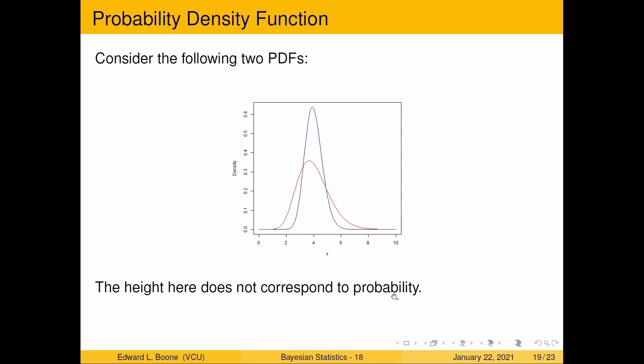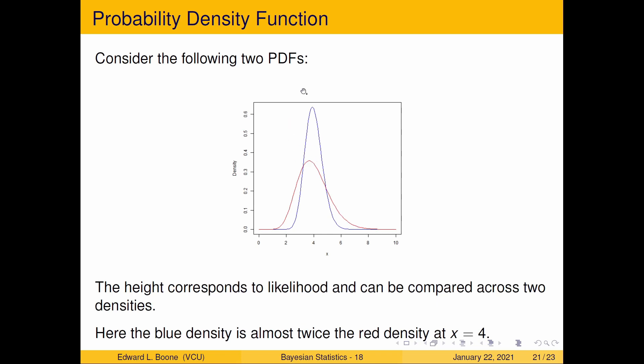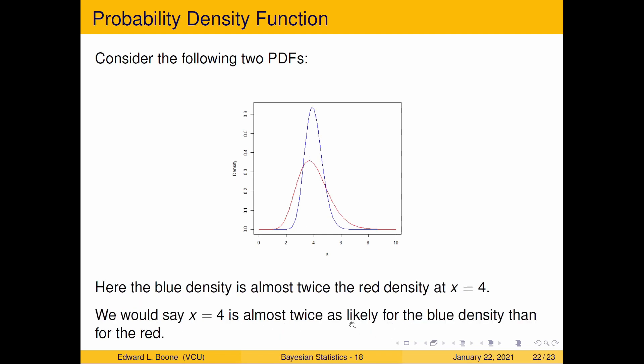And the height here does not correspond to probability. It corresponds to what's called density, or how fast the thing is changing. But you can think of this as likelihood. Because remember, we were talking about the probability of this one is about twice the probability of the other one. So this is the idea of it's like twice as likely to be one of these than the other. And if you look, the blue density is almost twice as high as the red density. And so we could say that for x equals four, it's more than twice as likely on the blue density than on the red density. And this is going to become really important later, because we're going to have to specify prior distributions. And we need to be able to think about PDFs and what likelihood means.